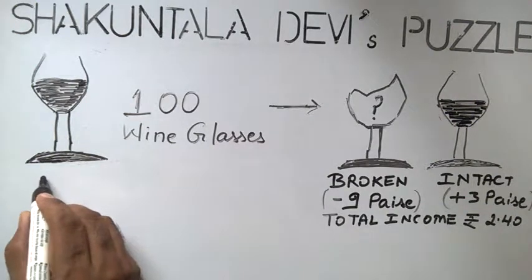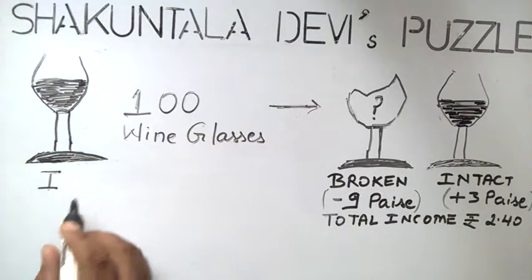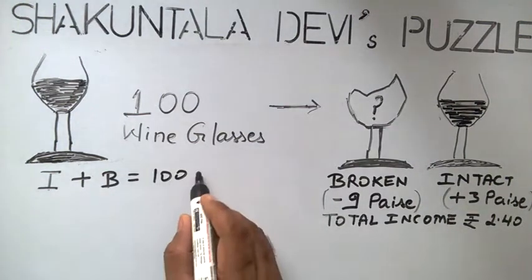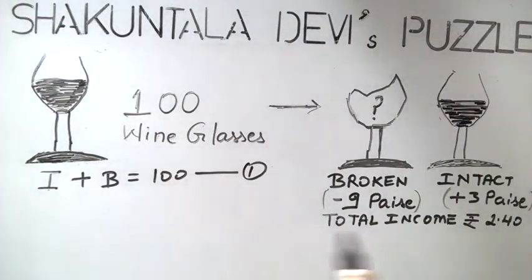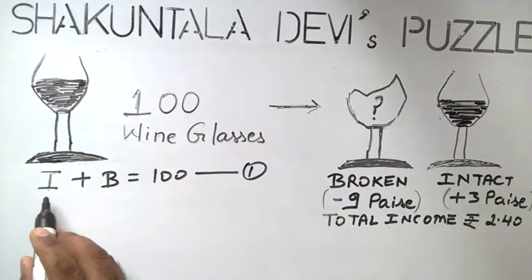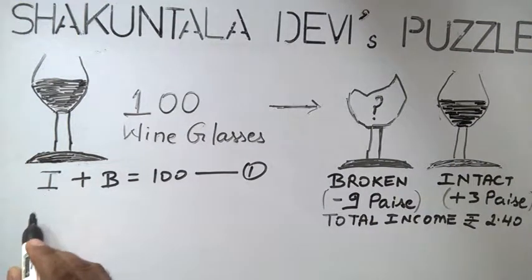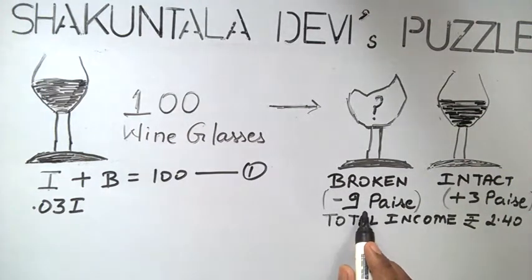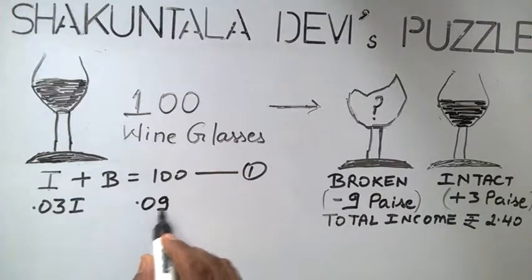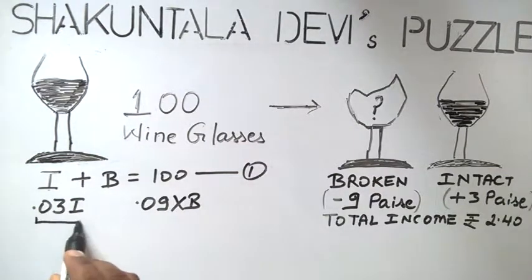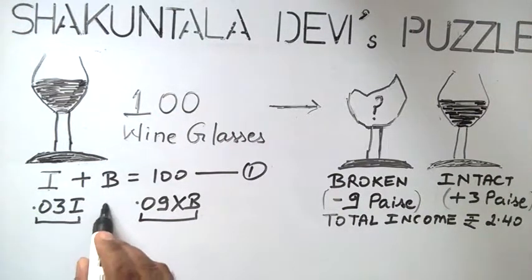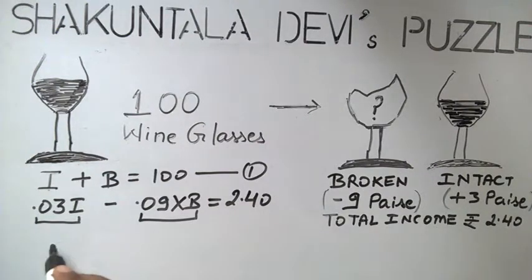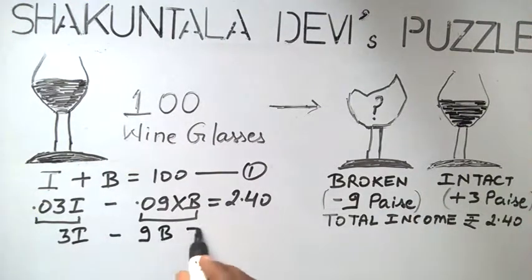Suppose the servant has delivered I intact glasses and B broken glasses. The sum of both is equal to 100 total glasses — this gives equation 1. As 3 paise is paid for each intact glass, total rupees paid for intact glasses is 0.03 into I. Total penalty is 0.09 into B. Total income minus total penalty gives the actual income: 3I minus 9B equals 240.